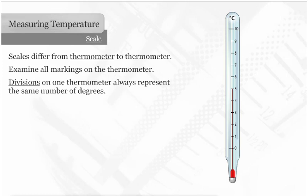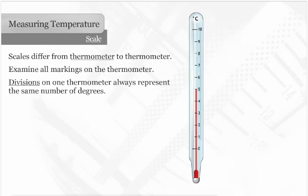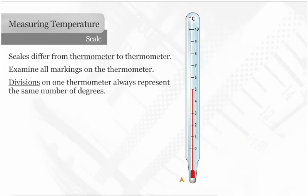The scale makes a big difference when reading a temperature. Look at thermometer A. Each division represents one degree, and the temperature is five degrees.